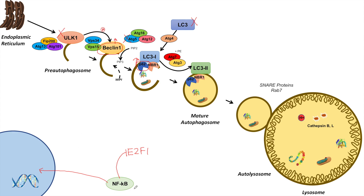So NF-κB has a couple of different roles — it can increase parts of the macroautophagy pathway such as Beclin-1 and P62, but it can also inhibit E2F1 and lead to suppression of ULK1, LC3, and ATG5. That was another lesson on transcriptional regulation of macroautophagy with a specific emphasis on transcriptional repression. I hope you found this video helpful — please like and subscribe for more videos like this one, and thank you so much for watching.